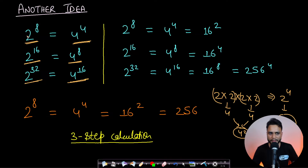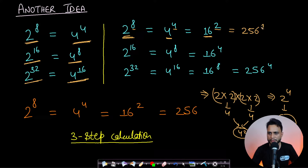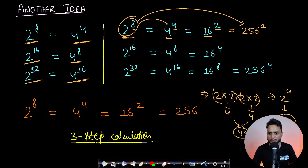This is nothing but squaring the base and taking half the exponent. Using that logic, 2 to the power 8 becomes 4 to the power 4, then 16 to the power 2, then 256 to the power 1 — so the final answer is 256. Instead of multiplying 2 eight times (8 steps), you only need 3 steps. This heavily reduces the number of operations.